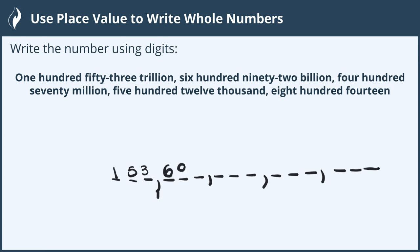So we're going to put in 692, and this is our billion comma. Then we have 470 million, 470 million here, and here's our millions comma.